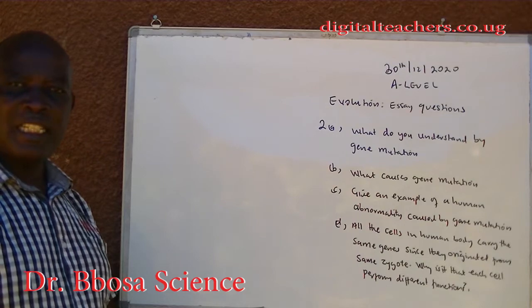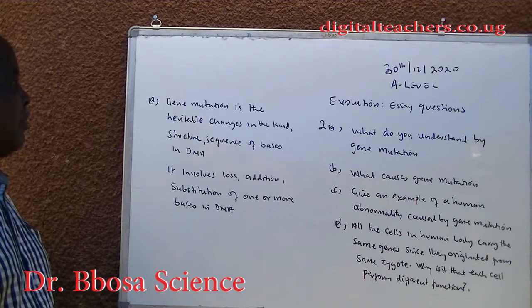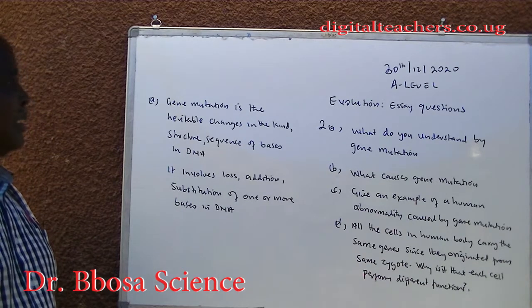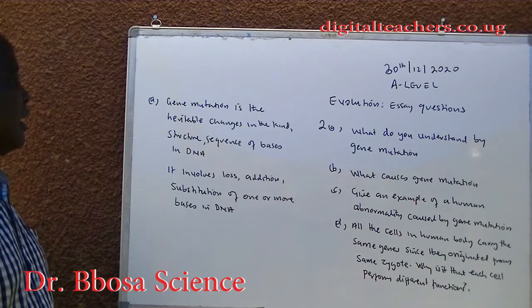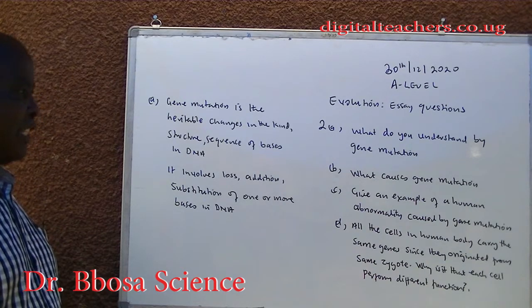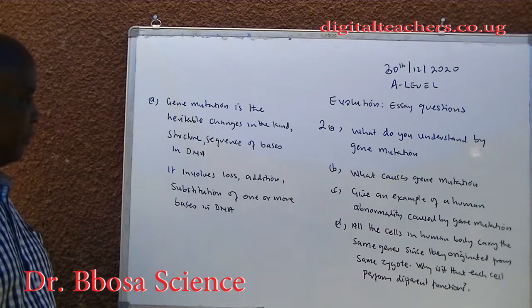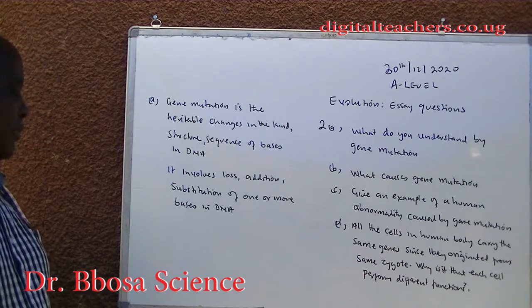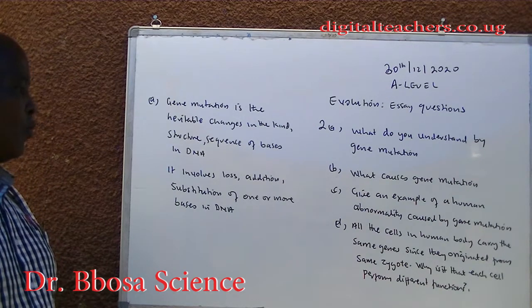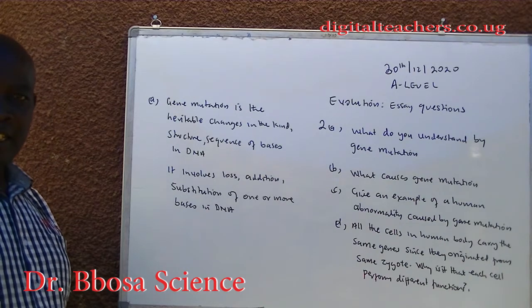You can pause and answer. A. Gene mutation is the heritable change in the kind, structure, and sequence of bases in DNA. It involves loss, addition, or substitution of one or more bases in DNA.